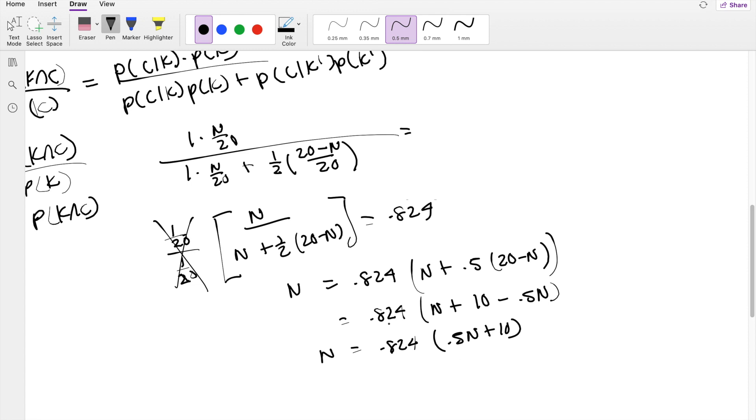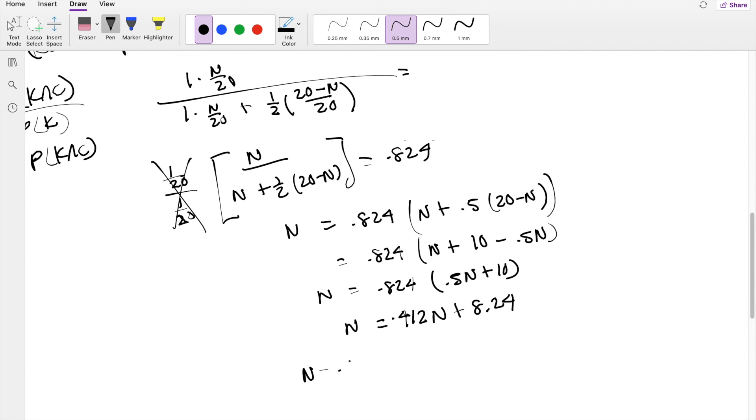Multiplying 0.824 times 0.5, you get 0.412N plus 8.24 equals N. Collecting N's on both sides, you get N minus 0.412N equals 8.24. This basically is coefficient 1, so 1 minus 0.412 equals 0.588N equals 8.24.